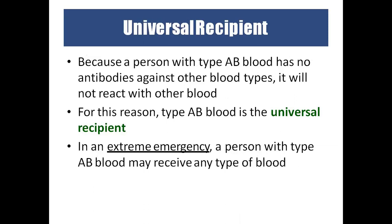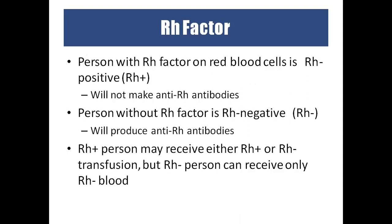Universal donor and recipient compatibility is typically used only in emergencies; normally they try to match the same blood group. For the Rh factor: if the RBC has the Rh antigen, the person is Rh positive; if not, Rh negative. For example, blood group A positive means the RBC has both A antigen and Rh antigen, and the plasma has B antibody. Rh positive persons cannot receive blood from Rh negative donors, but Rh negative persons can receive from Rh positive donors.